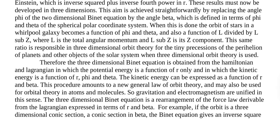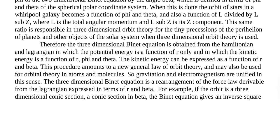Therefore, the three-dimensional Binet equation is obtained from the Hamiltonian and Lagrangian, in which the potential energy is a function of R only, and the kinetic energy is a function of R, Phi, and Theta. The kinetic energy can be expressed as a function of Beta. This procedure amounts to a new general law of orbit theory, and may also be used for orbital theory in atoms and molecules — so gravitation and electromagnetism are unified in this sense.